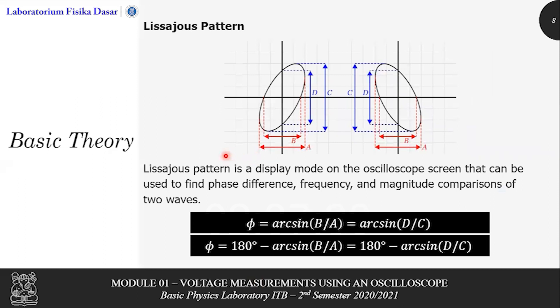And then also the Lissajous pattern. The Lissajous pattern is a display mode on the oscilloscope screen that can be used to find phase difference, frequency, and magnitude comparison of two waves. We will need this to find phase difference. There are two equations that govern the Lissajous pattern. The first one above is used for the left picture when the Lissajous pattern is tilted to the right, while the second equation is used for the right picture when the Lissajous pattern is tilted to the left.